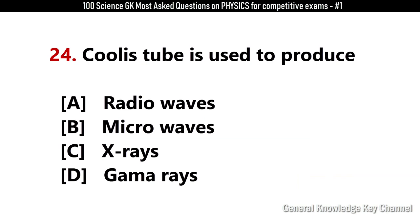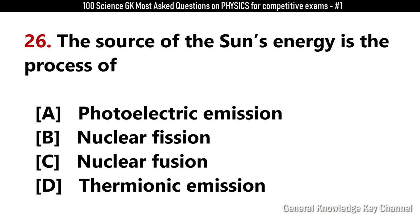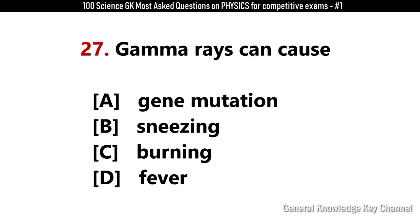A Coolidge tube is used to produce? Answer C: X-rays. Which of the following is used to regulate electric supply? Answer A: Zener diode. The source of the sun's energy is the process of? Answer C: Nuclear fusion. Gamma rays can cause? Answer A: Gene mutation.